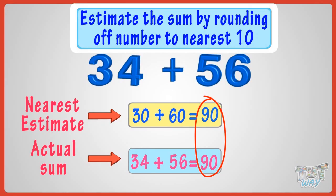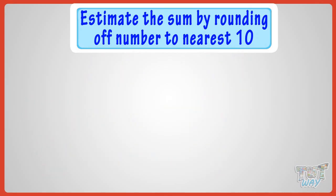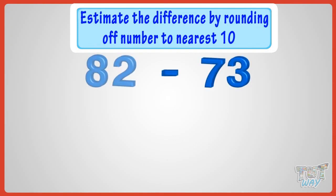Now, let's take another example. We have to subtract 73 from 82. Here, both the numbers are midway between the two 10s. So, first, we will be rounding off them.